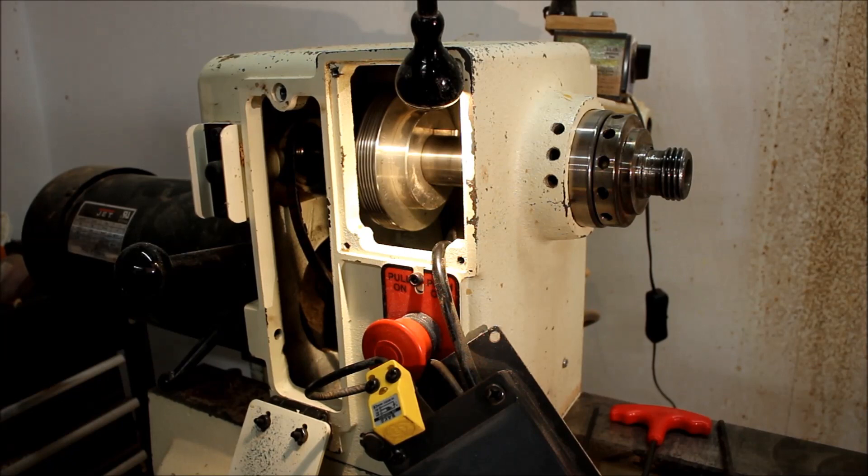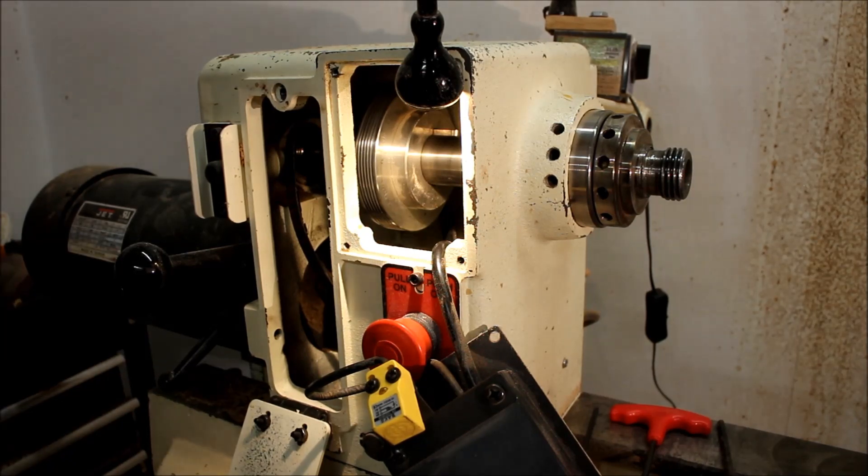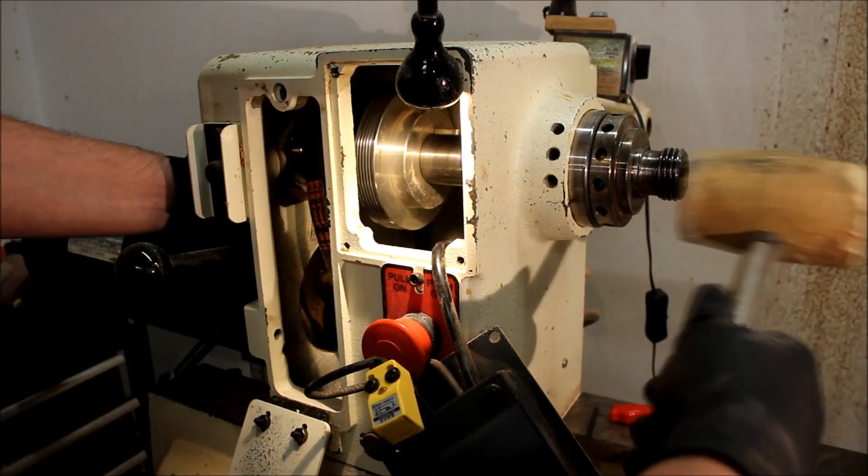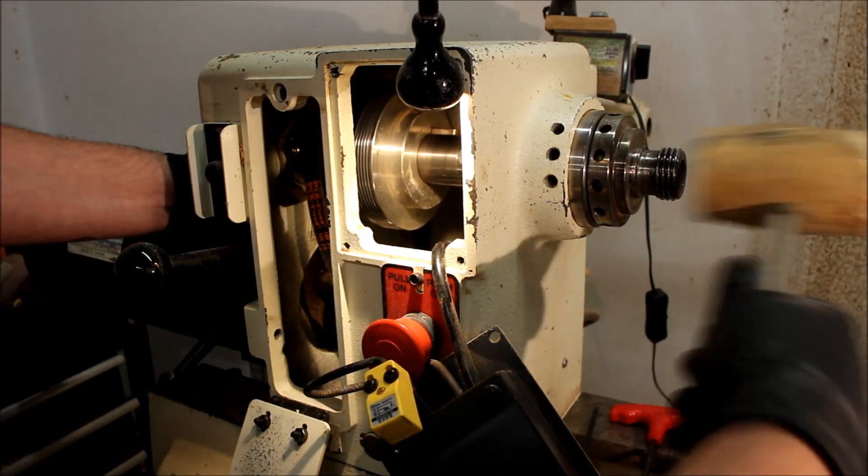So all our inside components are on the shaft where they need to be. We've got the bearing in this side and the bearing in this side and we're going to just gently tap this with a rubber mallet to get that bearing seated in there.